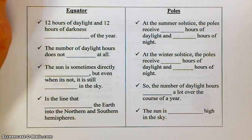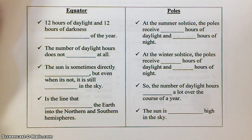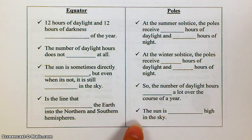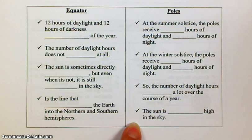At the winter solstice, the poles receive zero hours of daylight and 24 hours of night. Remember, when the pole is on the nighttime side of the terminator, that's winter and it's receiving no daylight; when the pole is on the daytime side of the terminator, it's got daytime all the time and no nighttime. So at the poles, the number of daylight hours changes or varies a lot over the course of a year, and the sun is never high in the sky — it's always fairly low towards the horizon.